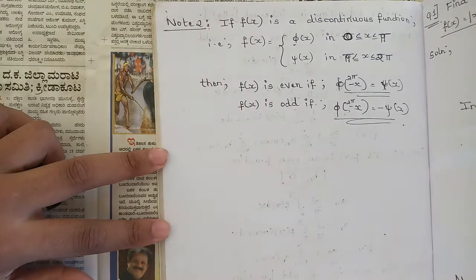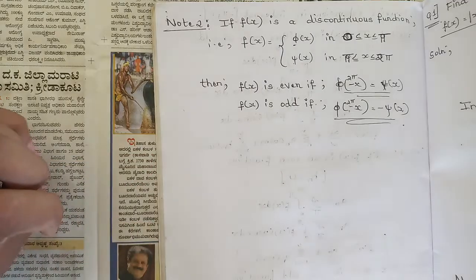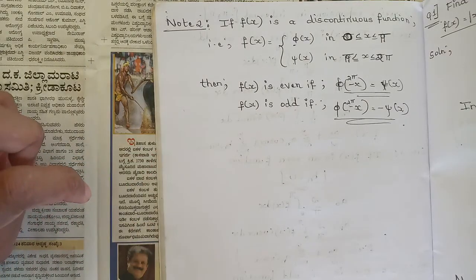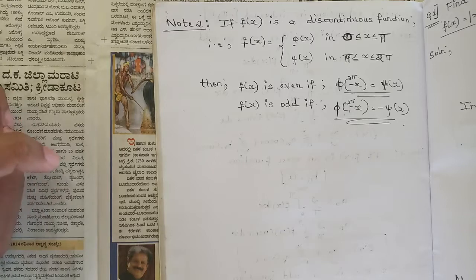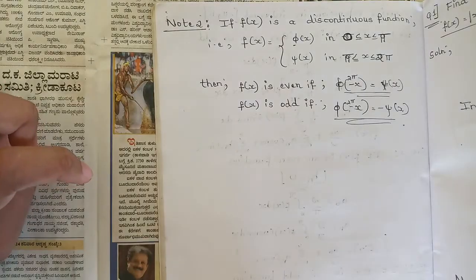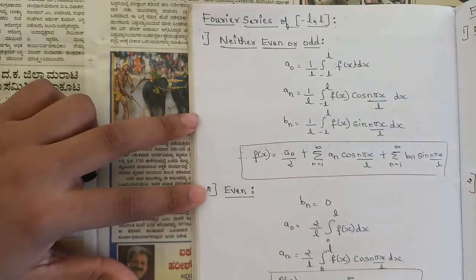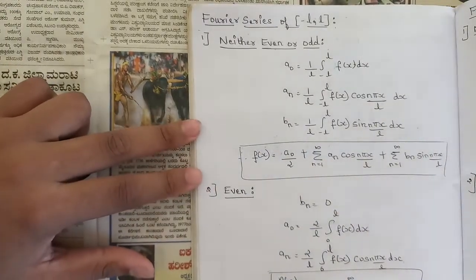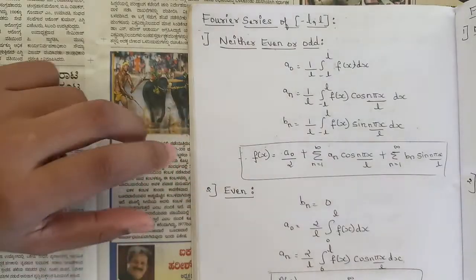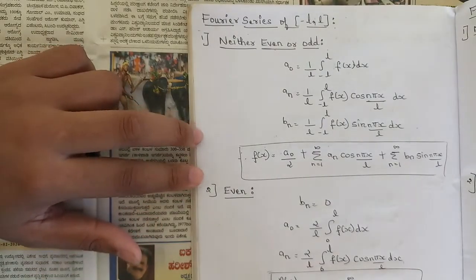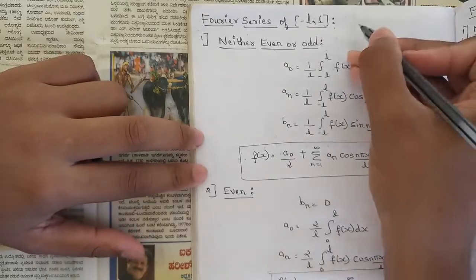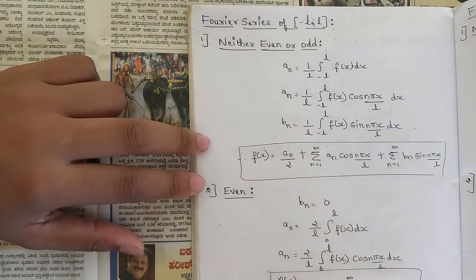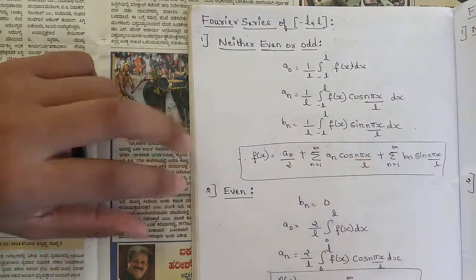I stressed a lot on the interval minus pi to pi because you need to understand that as the foundation. If you don't understand that, the rest of the topics are very tough. So you need to understand that basic. Now we move to the next interval: minus l to l. Here, l is a constant. For example, if l equals 1, the interval is from minus 1 to 1. In questions, different numbers will be given — minus 1 to 1, minus 2 to 2, minus 3 to 3, and so on.